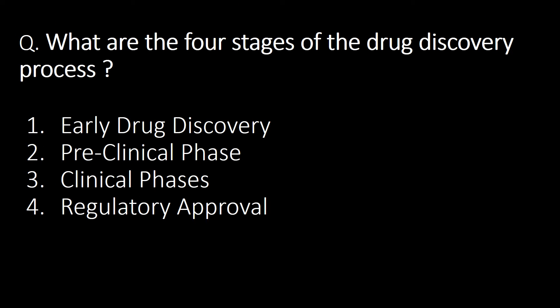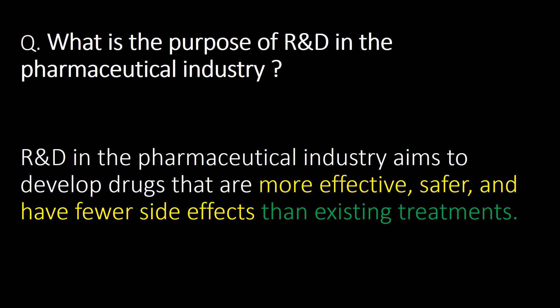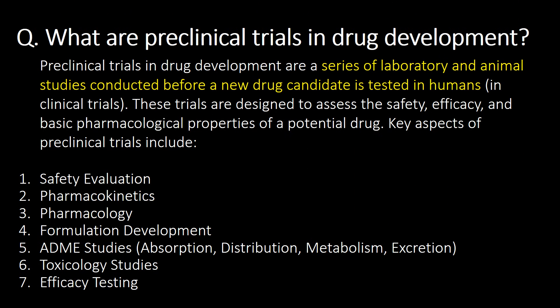What are the four stages of the drug discovery process? The four important stages are: first, early drug discovery; second, pre-clinical phase; third, clinical phases; and fourth, regulatory approval. One more basic and important question: what is the purpose of R&D in the pharmaceutical industry? R&D in the pharmaceutical industry aims to develop drugs that are more effective, safer, and have fewer side effects than existing treatments.